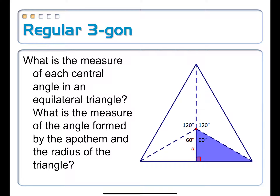The apothem A is the short side across from the 30-degree angle. Double that gives the radius (the hypotenuse). Multiplying the apothem by the square root of 3 gives the longer leg of the right triangle, and doubling that gives the whole side length: two times A times the square root of 3.